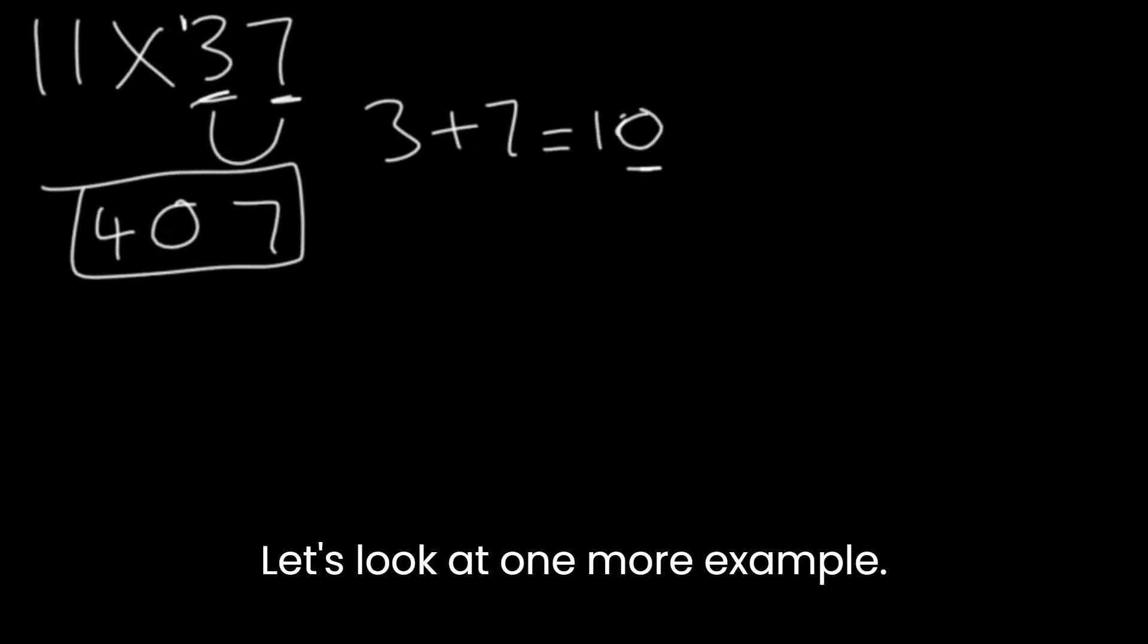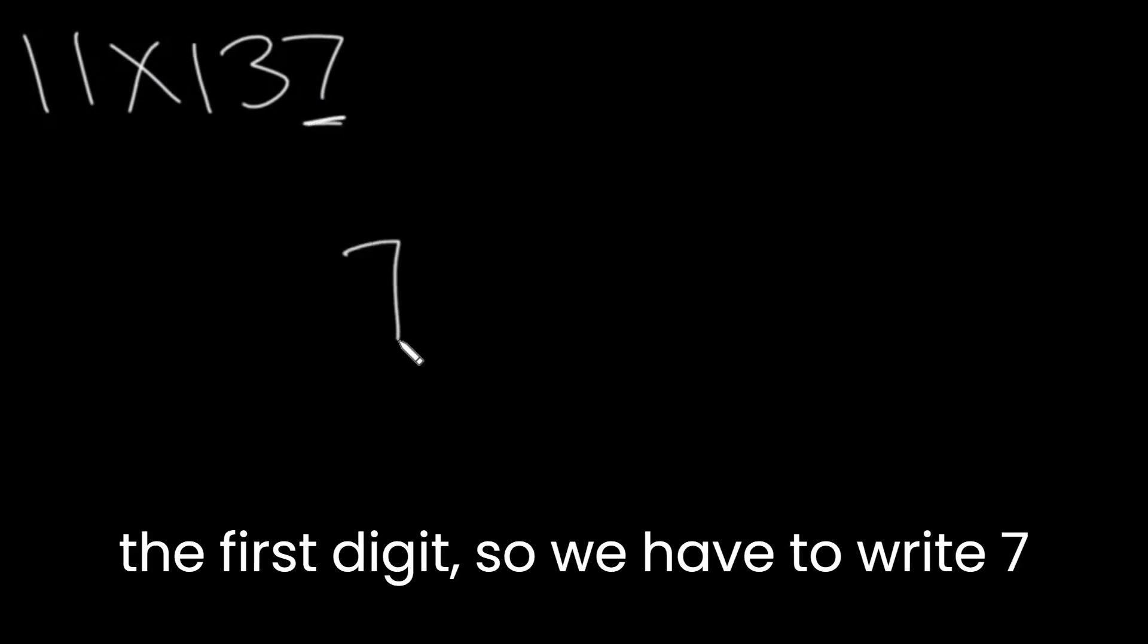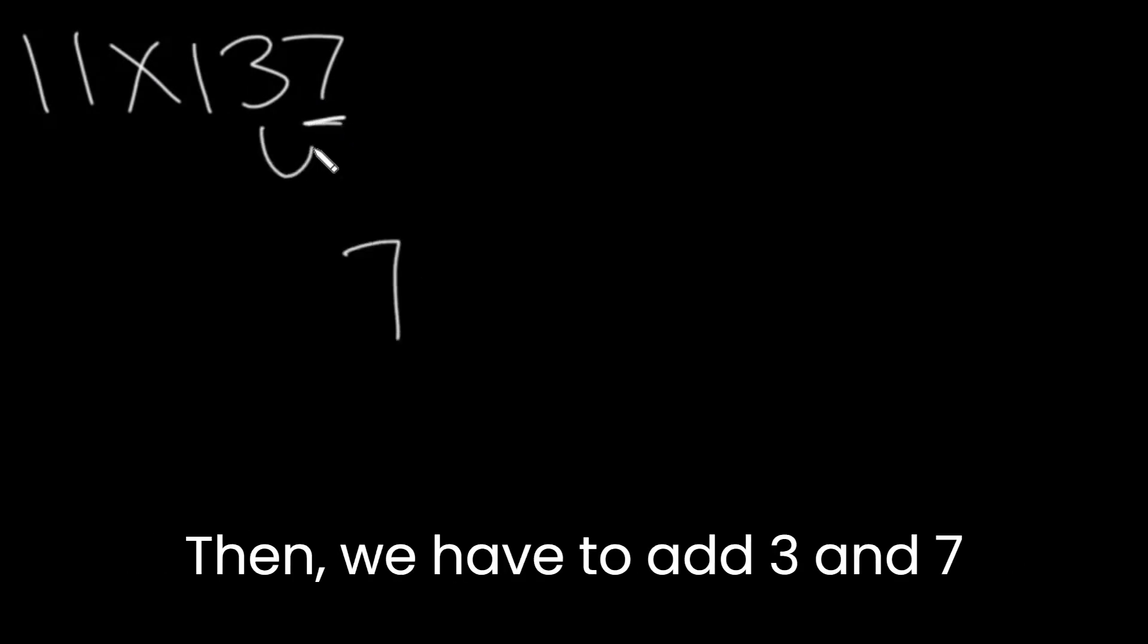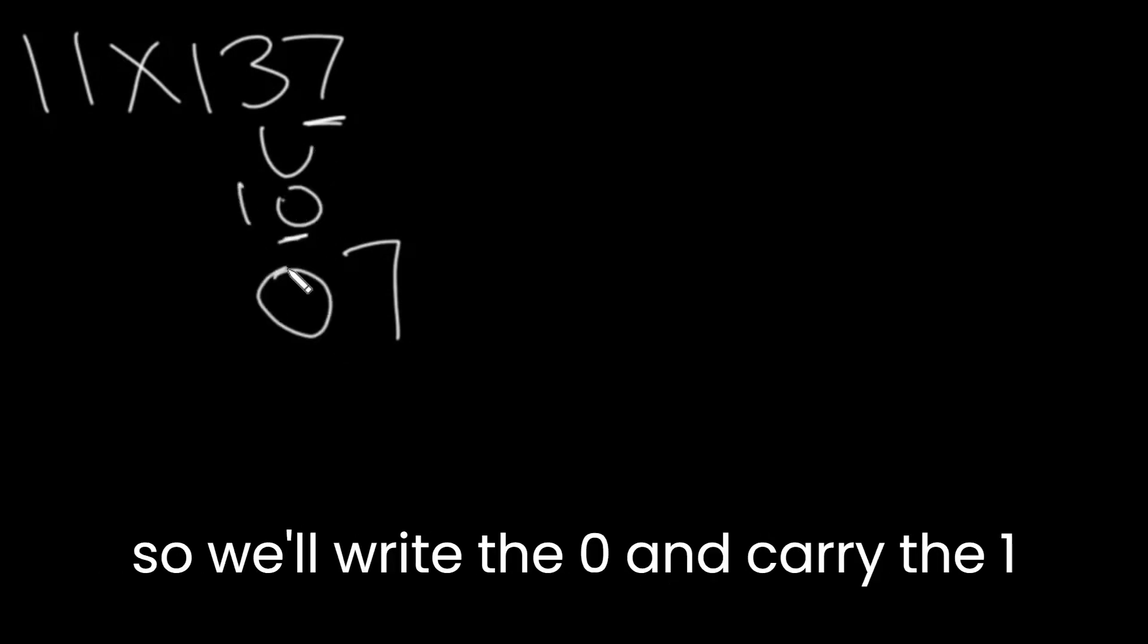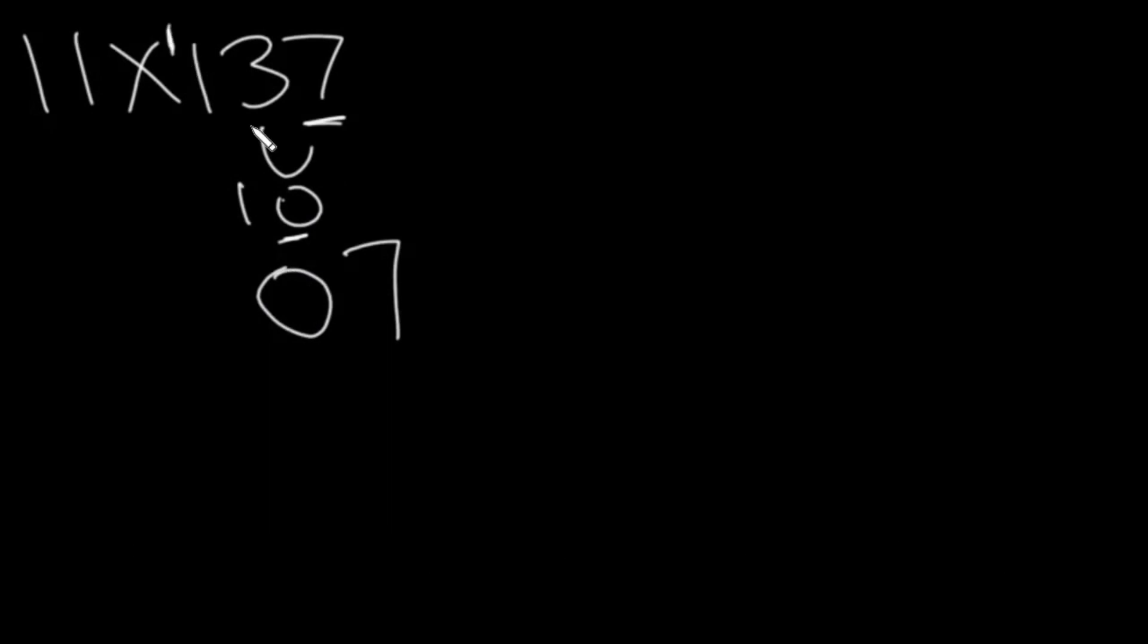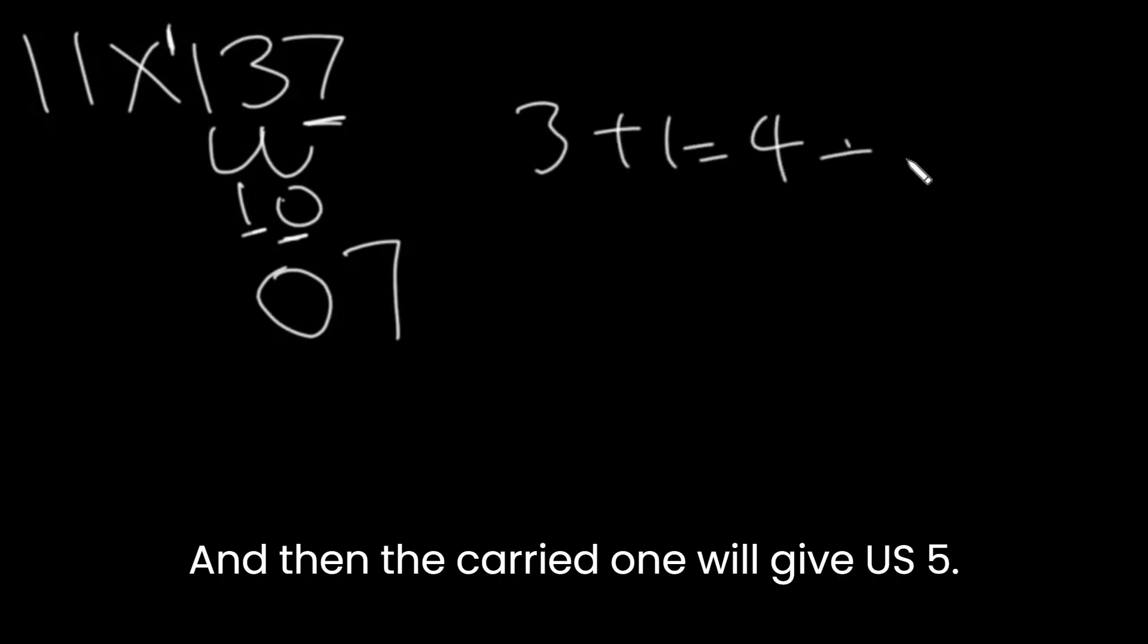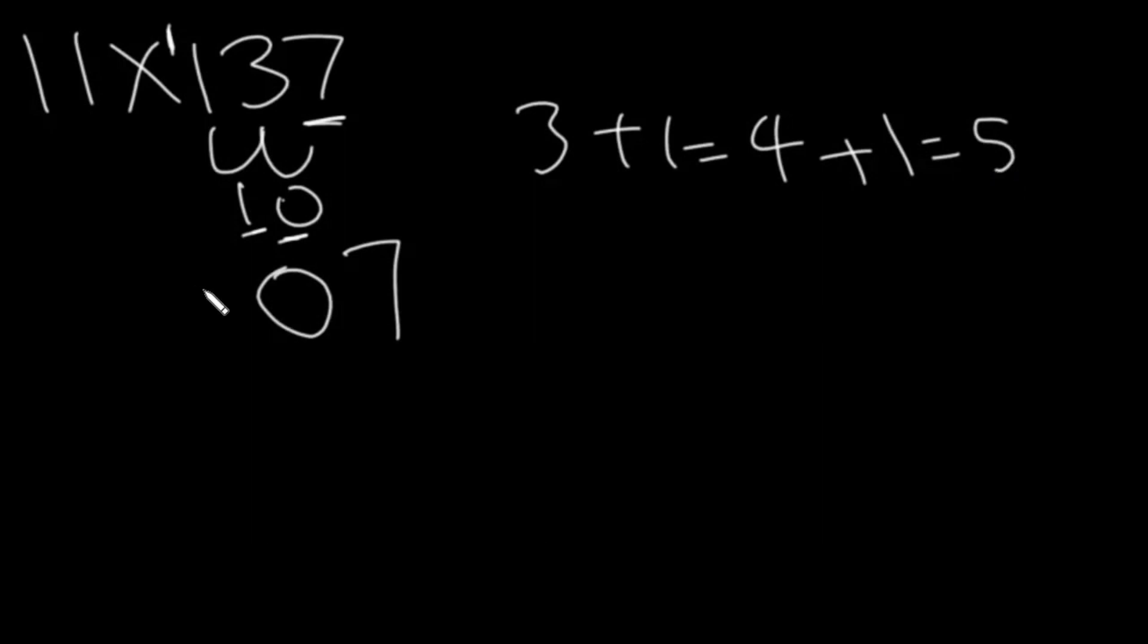Let's look at one more example. Let's look at 11 times 137. Again, the first step is to write the first digit, so we have to write 7. Then we have to add 3 and 7, so that'll give us 10. However, we can only write one digit, so we'll write the 0 and we will carry the 1. Then we have to add 3 and 1, so that'll give us 4. And then the carried 1 will give us 5. And then finally, we have to write the 1. So this is our final answer.